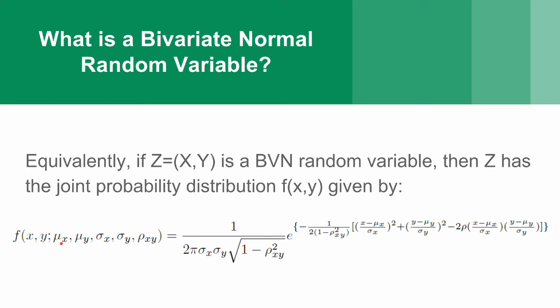Here, mu x is the mean of x, mu y is the mean of the random variable y, sigma x and sigma y are respectively the standard deviations of x and y, and rho xy is the correlation coefficient between x and y.